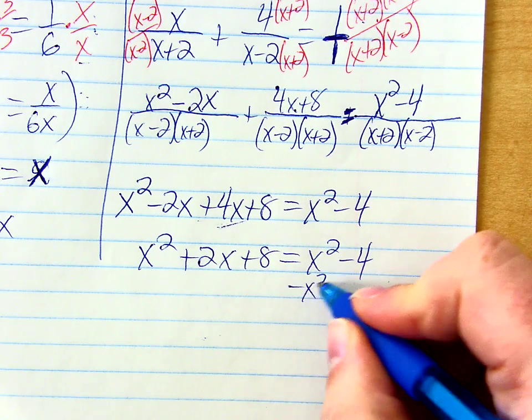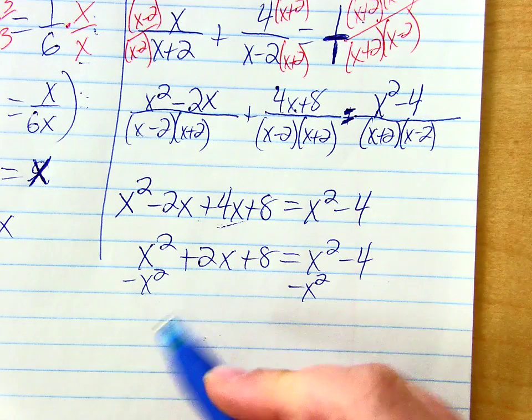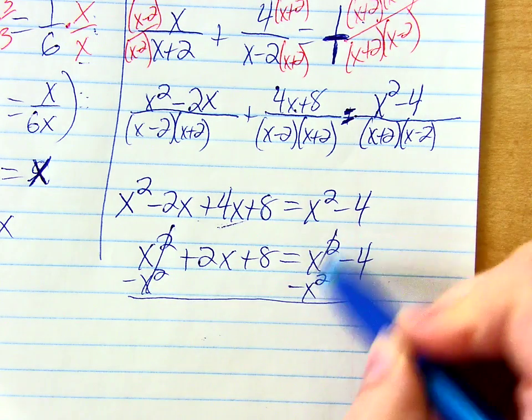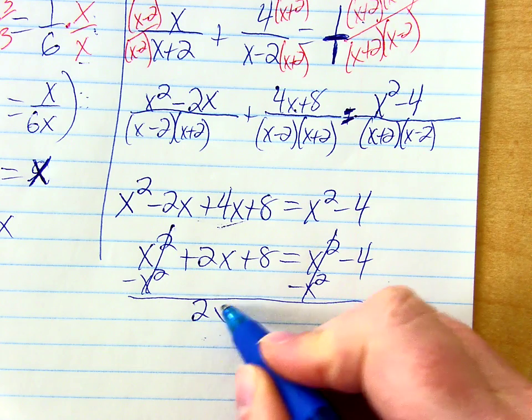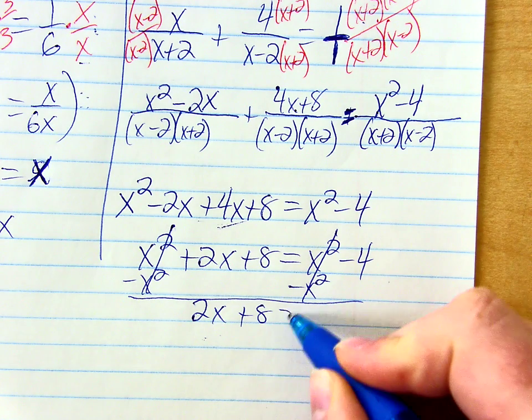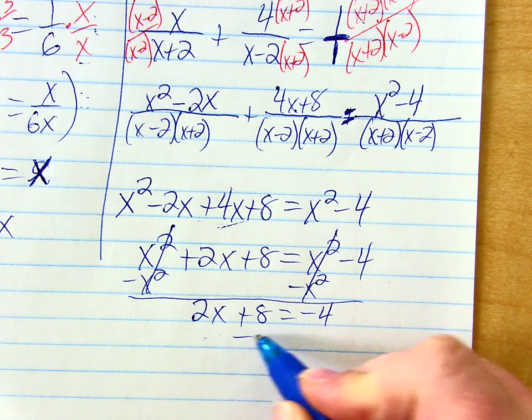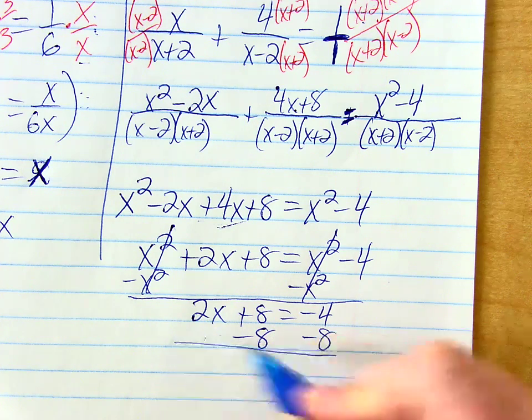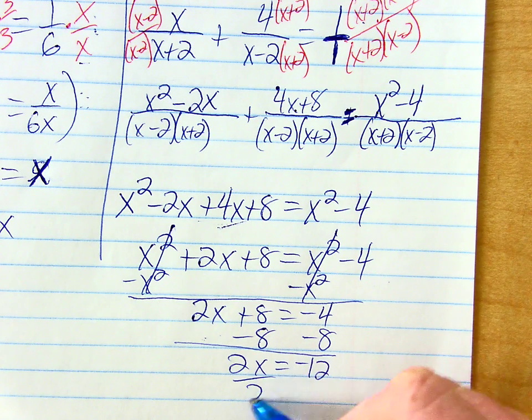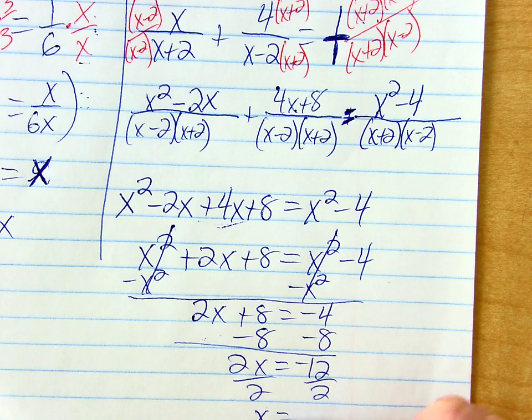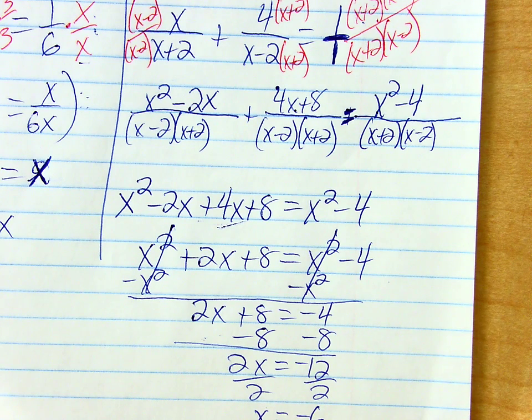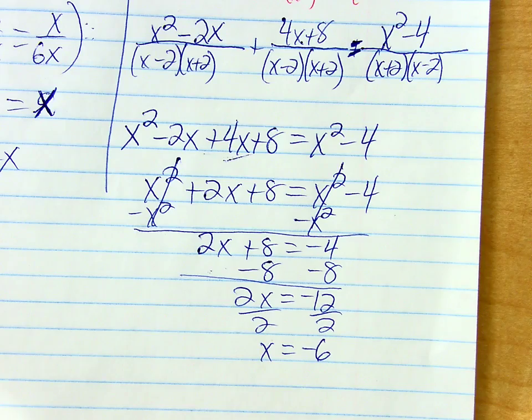Well, yeah. Let's get the x squareds together. So if I minus x squared from both sides, they cancel each other out. Okay. Now it's even easier. 2x plus 8 equals negative 4. So now, minus 8. 2x equals negative 12 and then divide by 2. And x is negative 6. Oops, sorry.